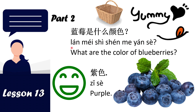藍美是什么颜色. The meaning of 藍美是什么颜色 is 'What is the color of blueberries?' 紫色 means purple. So 藍美是什么颜色 is 'What is the color of blueberries?' and 紫色 means purple.